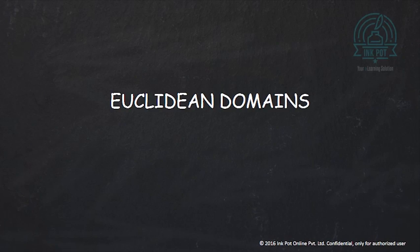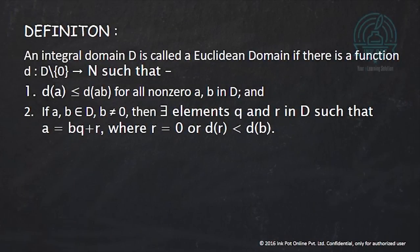These are an important class of integral domains and they have a good relation with the principal ideal domains and unique factorization domains. So let us start with defining Euclidean domains. We start with an integral domain D and if there exists a function denoted by small d from D minus {0} to the set of natural numbers starting from 1, such that it satisfies two properties.